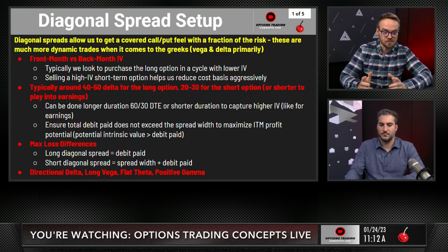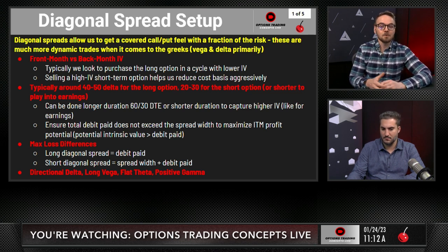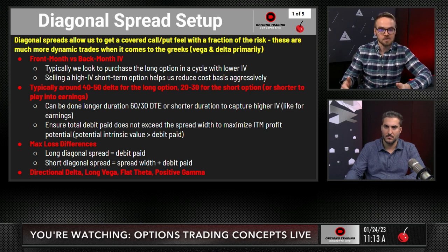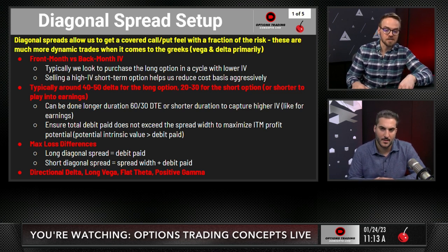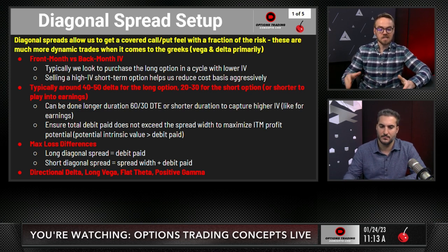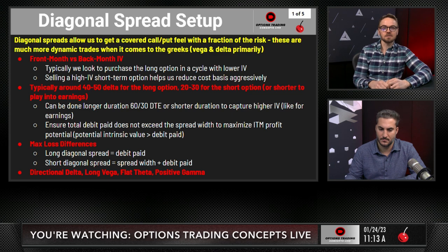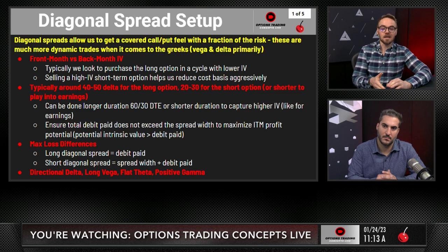With earnings setups, we've been doing this pretty frequently — almost exclusively — because the market has given us environments where we see low implied volatility in the back months like March or April, and then really heightened implied volatility in the weekly for binary announcements. You can do them for earnings with a weekly short and a longer duration long option, or with non-event cycles like a 60-day long and 30-day short. We just want to make sure we have a lot of space between the width of the spread and the debit paid.